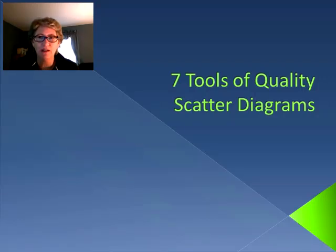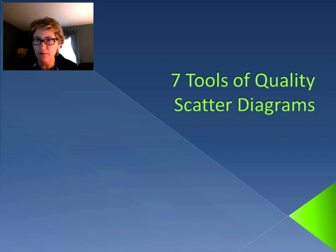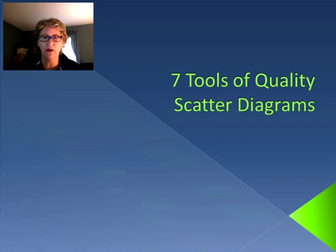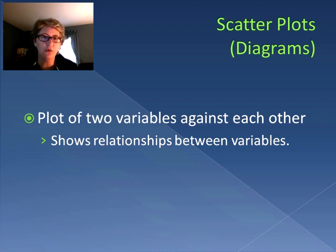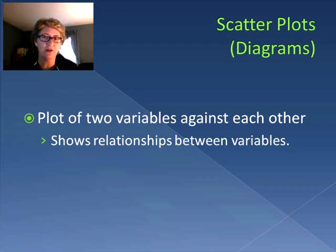Hello again and welcome back to Operations Management. We're continuing our series on the seven tools of quality, and this time we're going to be talking about scatter diagrams. Scatter diagrams are also known as scatter plots or scatter charts — those terms are used interchangeably. In essence, we're plotting two variables against each other on a graph to look for a relationship between those variables.